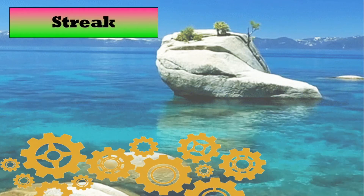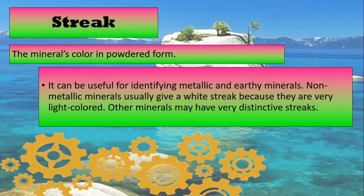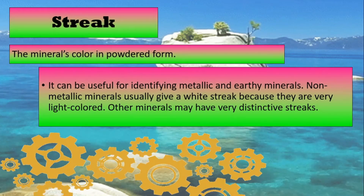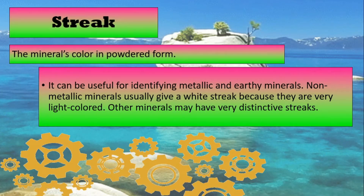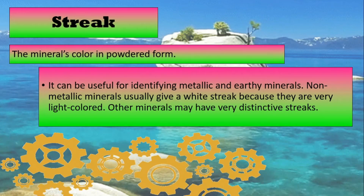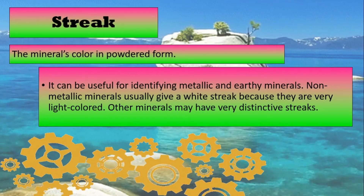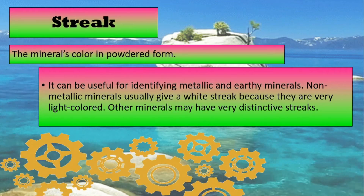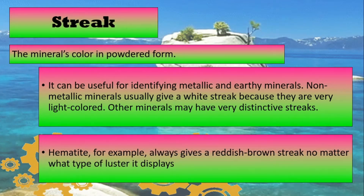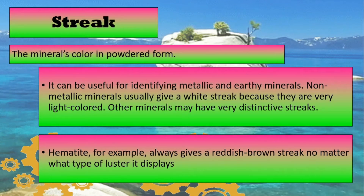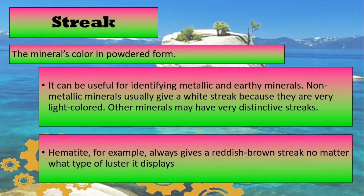Next, streak. Streak is the mineral's color in powdered form. It can be useful for identifying metallic and earthy minerals. The metallic minerals usually give a white streak because they are very light colored. Other minerals may have very distinctive streaks. An example is hematite — hematite always gives a reddish-brown streak no matter what type of luster it displays.